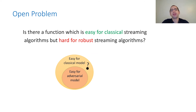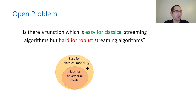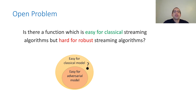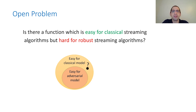The main take-home message is that this adversarial model is interesting and has not been investigated much, so there are many open questions. Here is one very fundamental open problem: is there a function that is easy to compute classically (polylogarithmic space assuming fixed stream) but hard for robust streaming algorithms (requiring polynomial space in the adversarial model)? We don't know, and we don't even have a good guess.